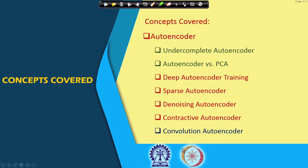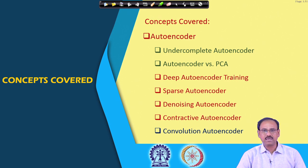That is what we have discussed in our previous lectures. Today what we are going to discuss is how to train a deep autoencoder — deep autoencoder training. Subsequently we will talk about other versions of autoencoders like sparse autoencoder, denoising autoencoder, contractive autoencoder, and so on.